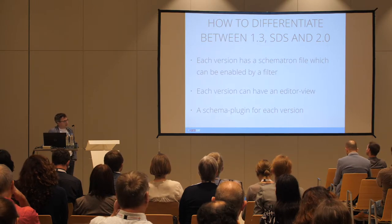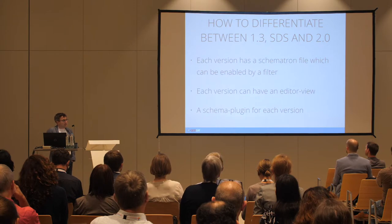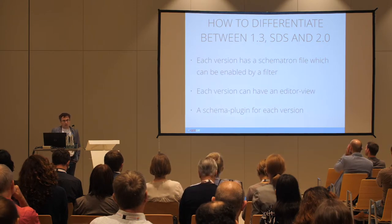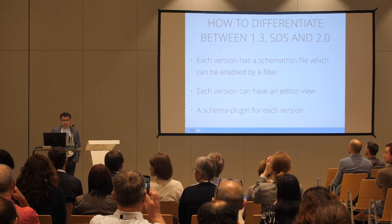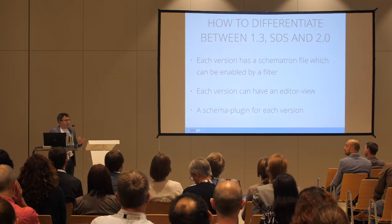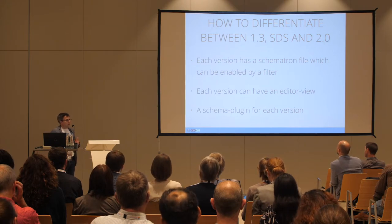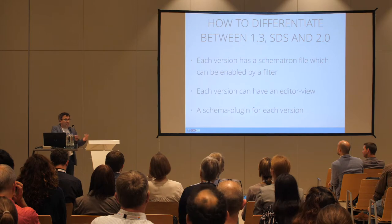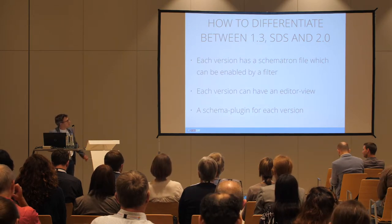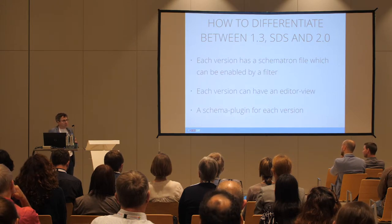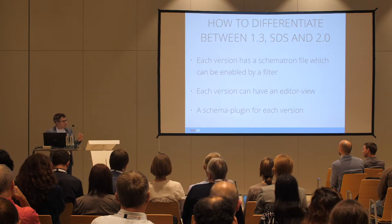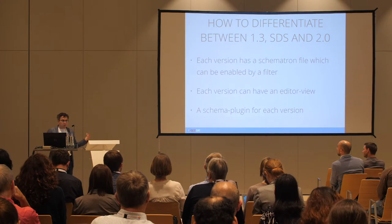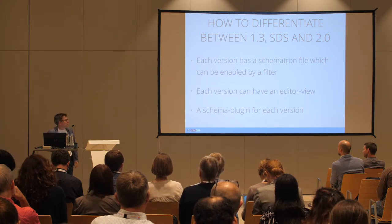There's also the aspect of history. The catalogue currently contains many INSPIRE metadata records still on the 1.3 profile, and new records coming in using the 2.0 profile. When we do a validation on a record, we have to identify which profile was used to create it. We're suggesting using multiple Schematron files — one for the 1.3 profile and one for the 2.0 profile — and either let the user decide which validation to apply, or use the 'conformsTo' section in the metadata to identify which technical guideline the metadata was created against.